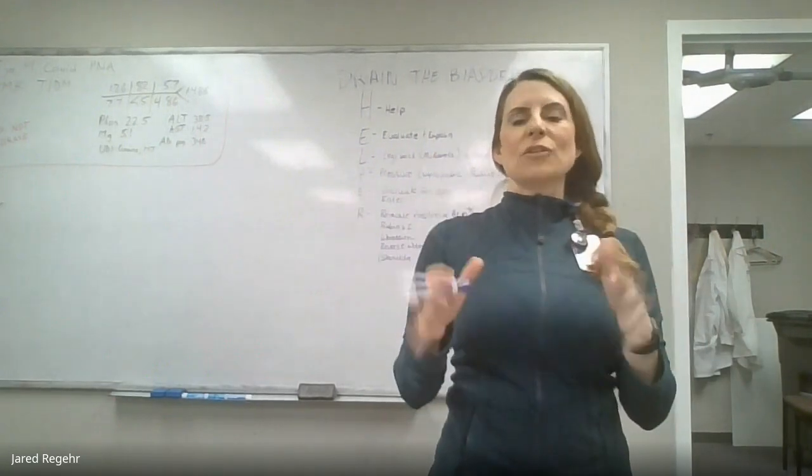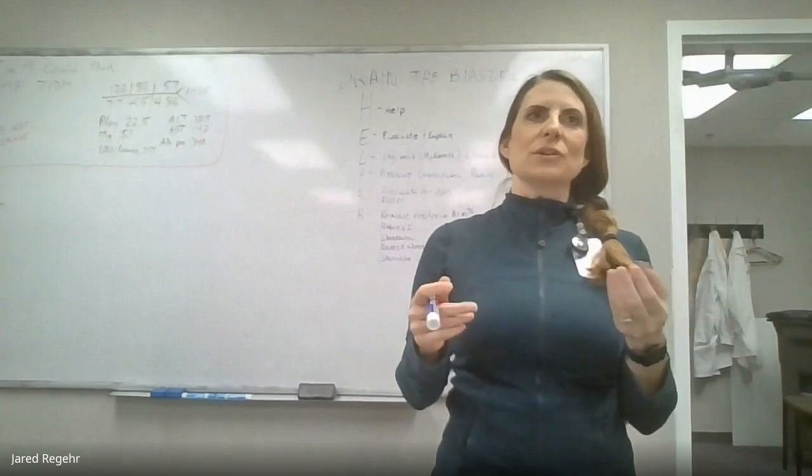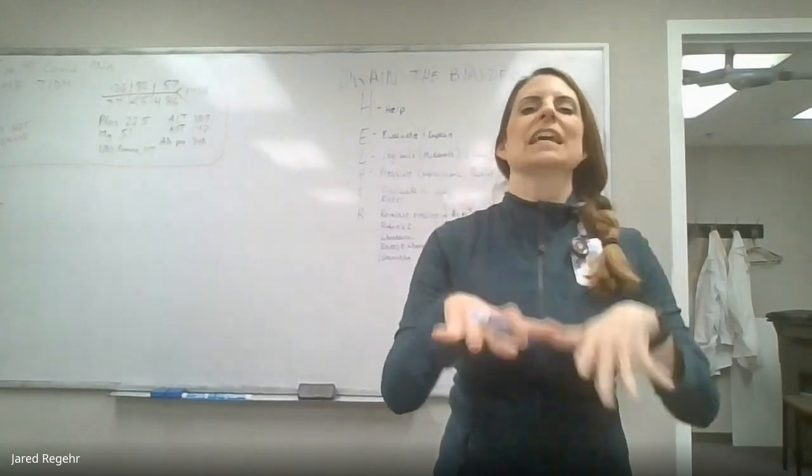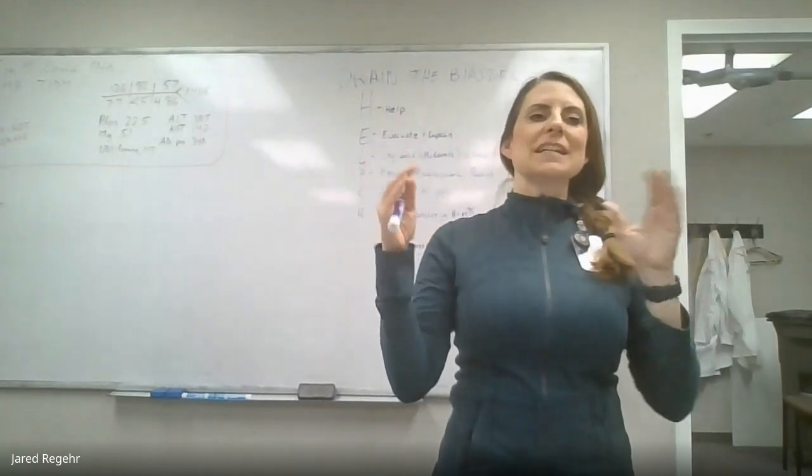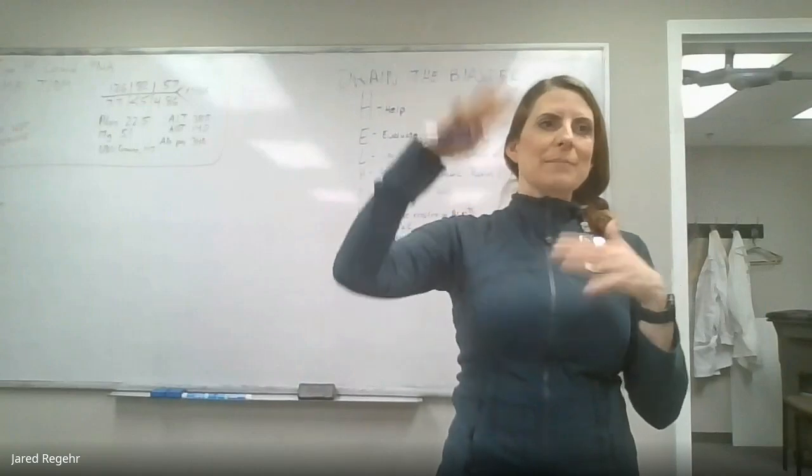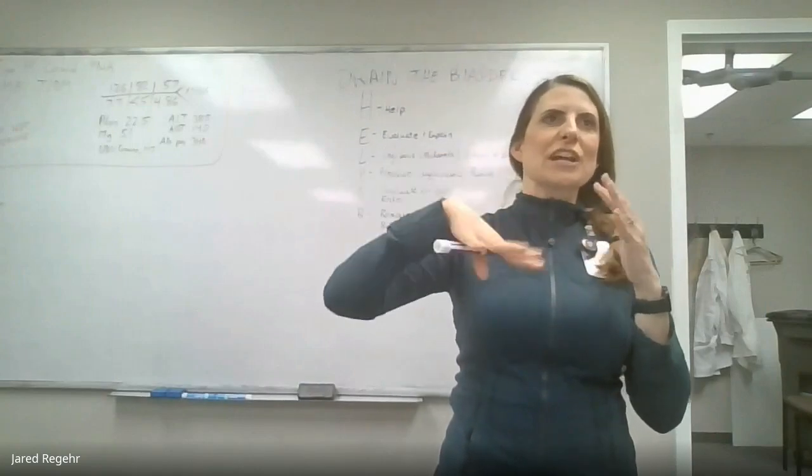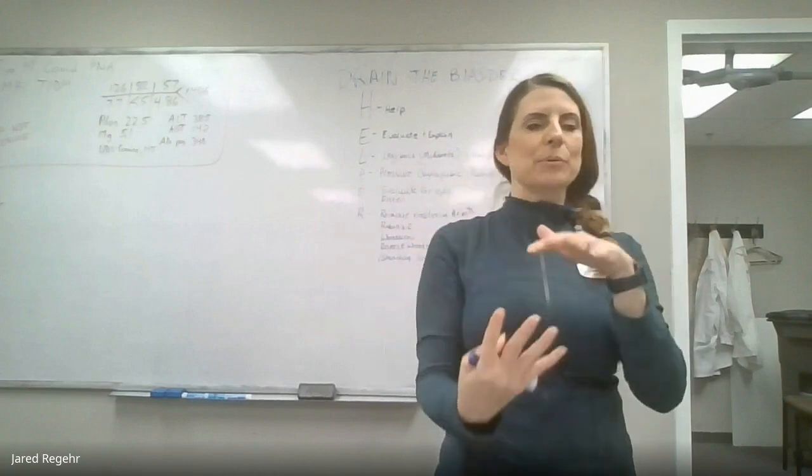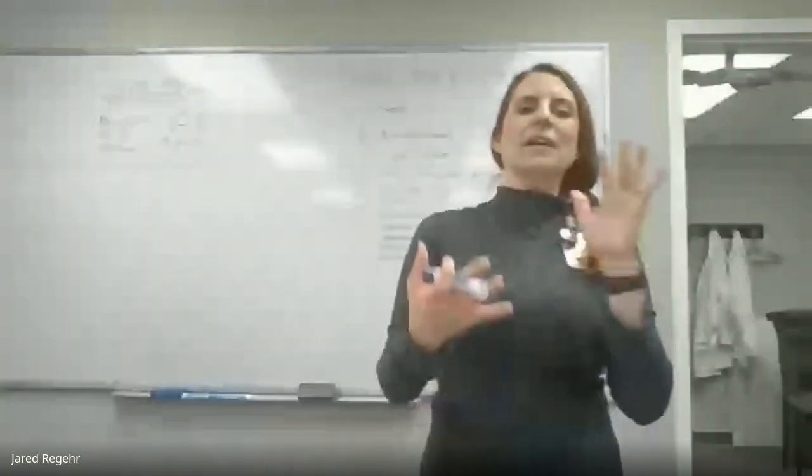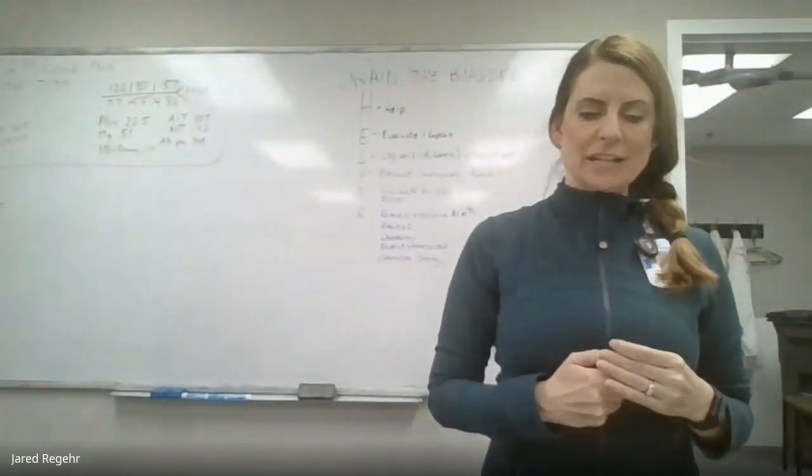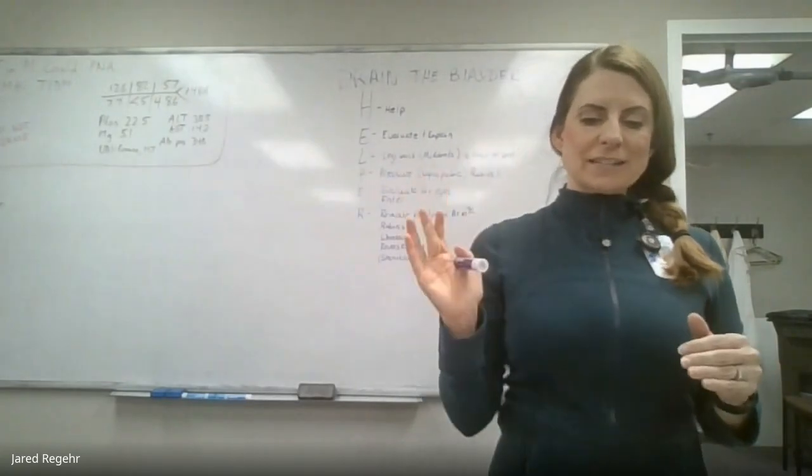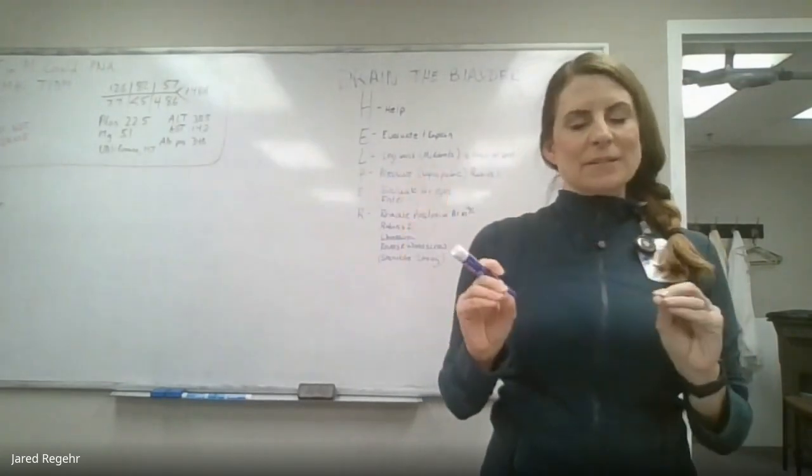So when you have a shoulder dystocia, really the best thing you can do is take just a brief second, take your hands off, because it is all geometry. You're trying to get the baby to be in the right position, just change the trajectory a little bit. If you keep pulling, you can get the baby into a more stuck position. So you have the legs back and this all kind of happens simultaneous.